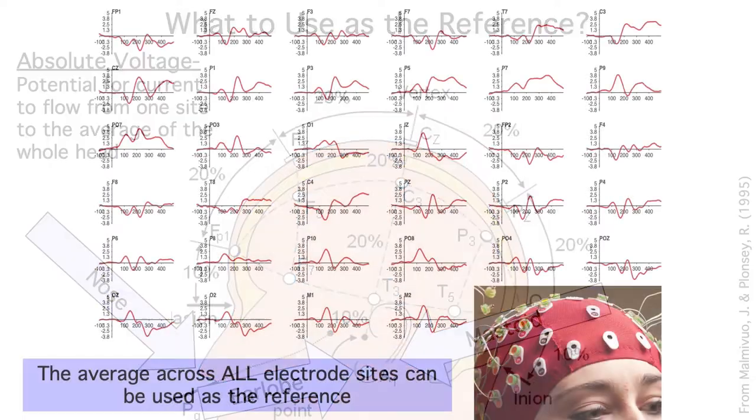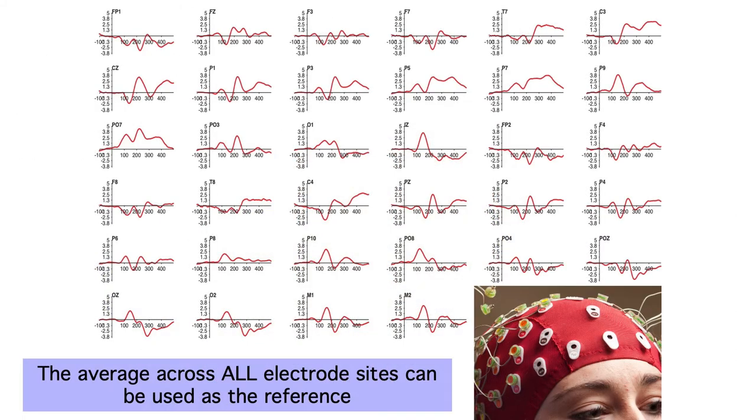Another common option is to use the average of all the electrodes as the reference. The idea is that this will get us close to the absolute voltage. However, the average across all our electrodes is not the same as the average over the whole head. How would you get electrodes on the bottom of the head, where the neck is? The average of all sites can be a fine reference, but it's not a magic bullet.